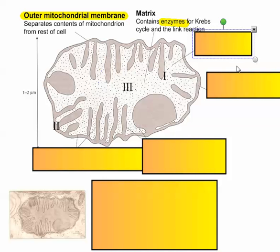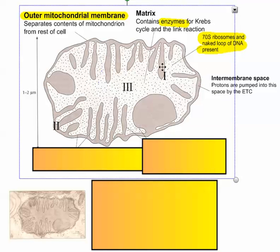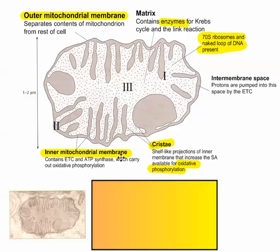separates its contents from the rest of the cytoplasm. The inner mitochondrial membrane is a separate layer in here. That creates a space between the inner membrane and the outer membrane — you have to say the whole thing: outer mitochondrial membrane, inner mitochondrial membrane. And so now we have an intermembrane space as well.